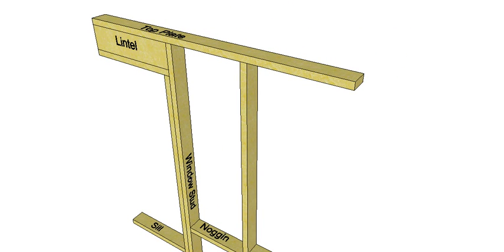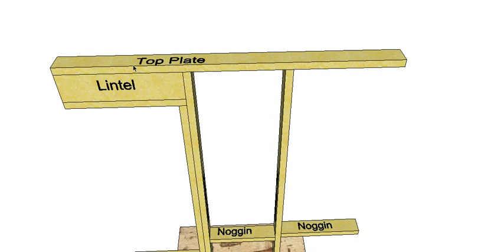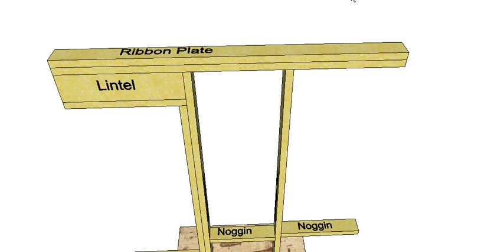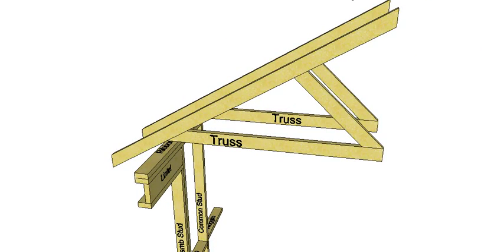We have our window stud, which is similar to a common stud but sits right next to our window, our top plate, and our lintel which carries the load over the window. Then we have our ribbon plate and our trusses. That's basically our frame done.